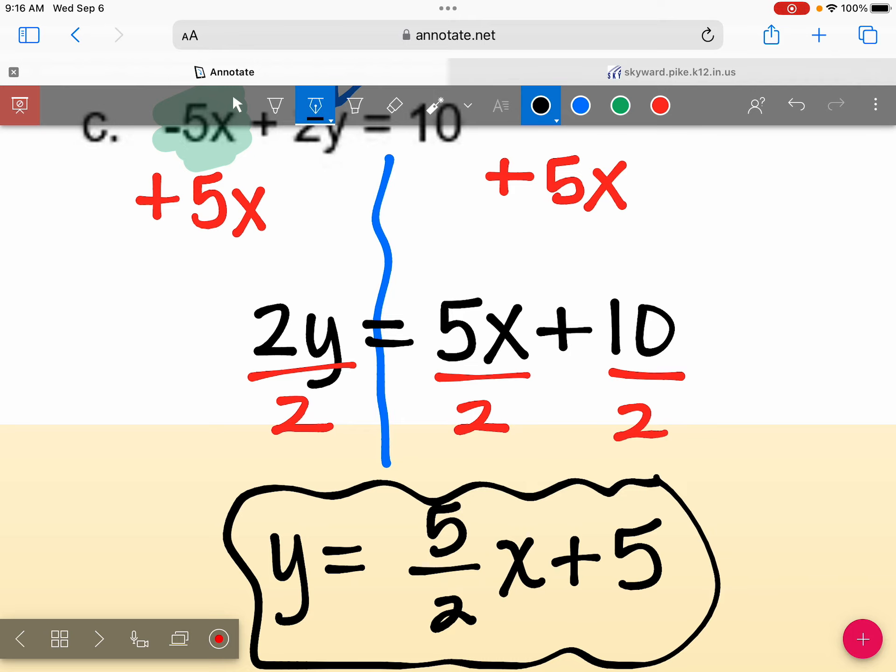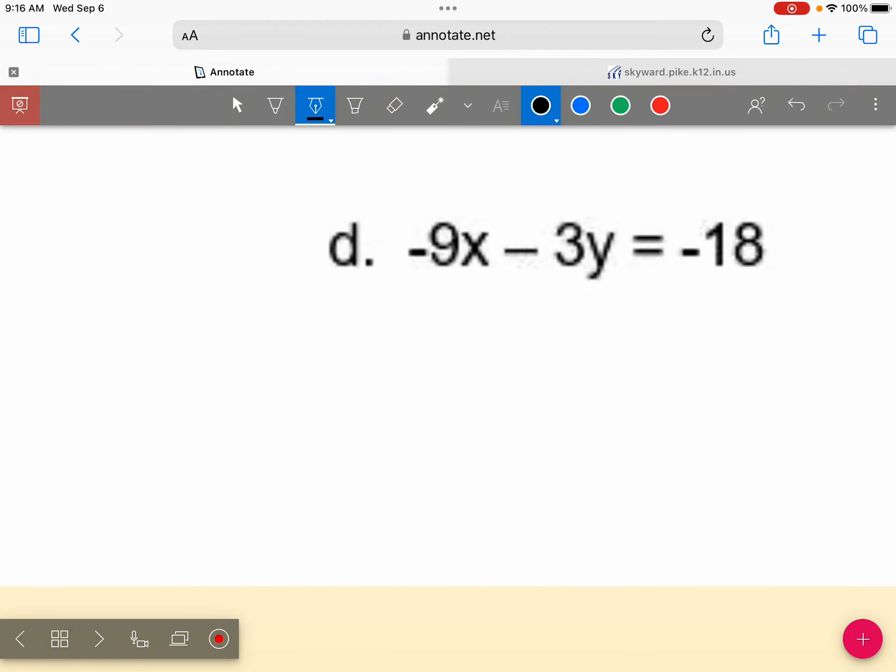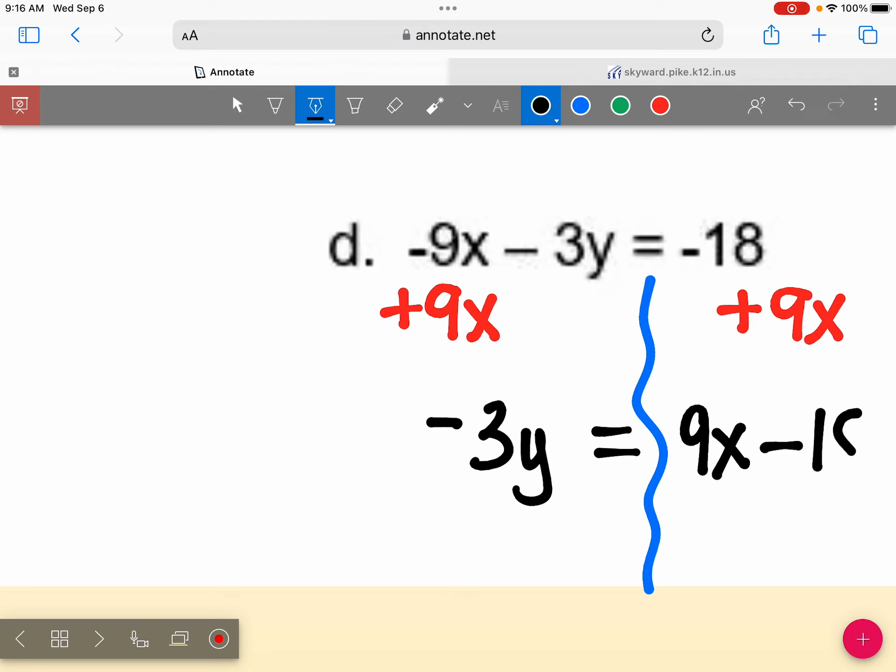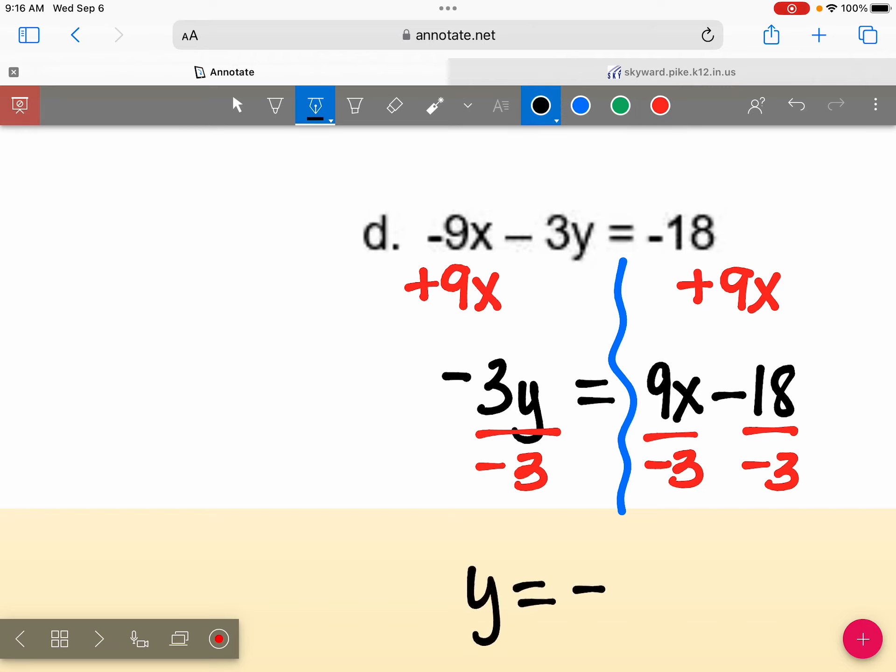So for question D, what am I going to do first? Add the 9x. So that would be negative 3y equals a positive 9x minus 18, because I added the 9x, that makes it positive. And then we're dividing everything by negative 3. So I get y equals negative 3x. And what do you get when you divide two negative numbers? Does that stay negative or does it switch to a positive? A positive 6. So again, we are going to start graphing. I think we start graphing next week. So we'll talk about how to graph. We did have some graphing on the last test.